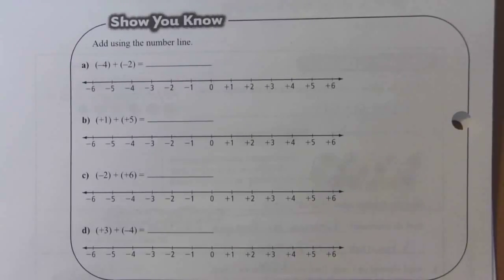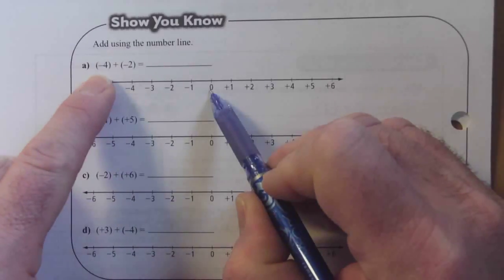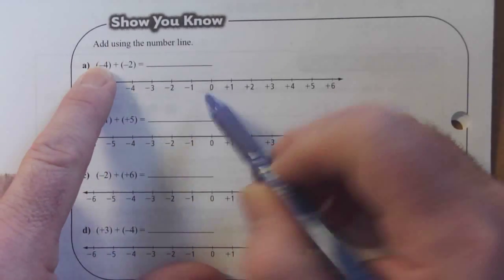Alright, so add using the number line. We always start at zero. First number is a negative, so I'm going to move in the left direction.